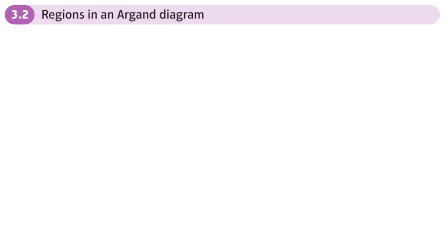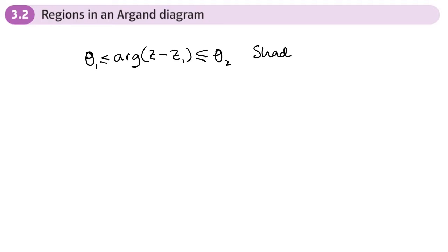This is the second section of chapter three on complex numbers, and here we're going to be looking at regions in our Argand diagram. The only difference between this and loci is it's about shading some part of our loci — it might be inside a shape, outside a shape, or between a shape. The loci we're going to be looking at is basically like an argument, to do with half lines, and it's going to be shading between two half lines.